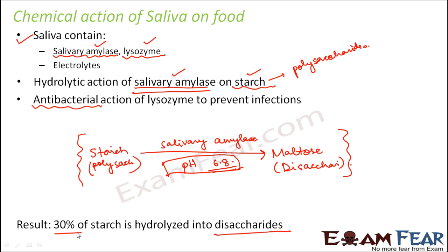For example, if you eat a burger, it has carbohydrates, fats, and proteins. When you chew and swallow it, no change happens to the fats or proteins in the mouth, but 30% of the starch in the carbohydrates gets converted into disaccharides. The disaccharides still need to be converted into further simpler forms later, but at least some change has taken place by the time the food passes through the oral cavity. The food will next go to the food pipe, the esophagus, but there is another very important part involved in swallowing.